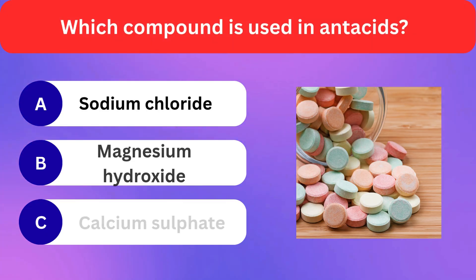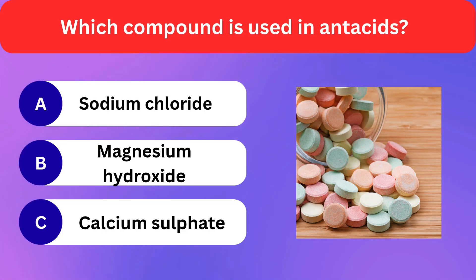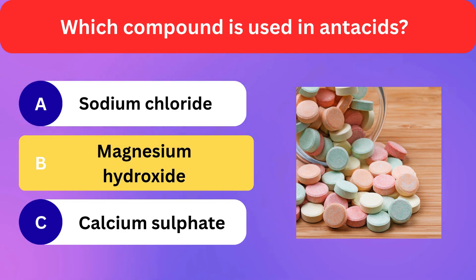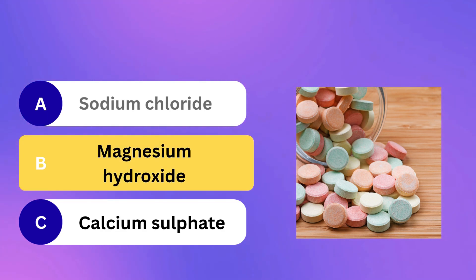Which compound is used in antacids? Sodium chloride, Magnesium hydroxide, Calcium sulfate. Correct answer is magnesium hydroxide.